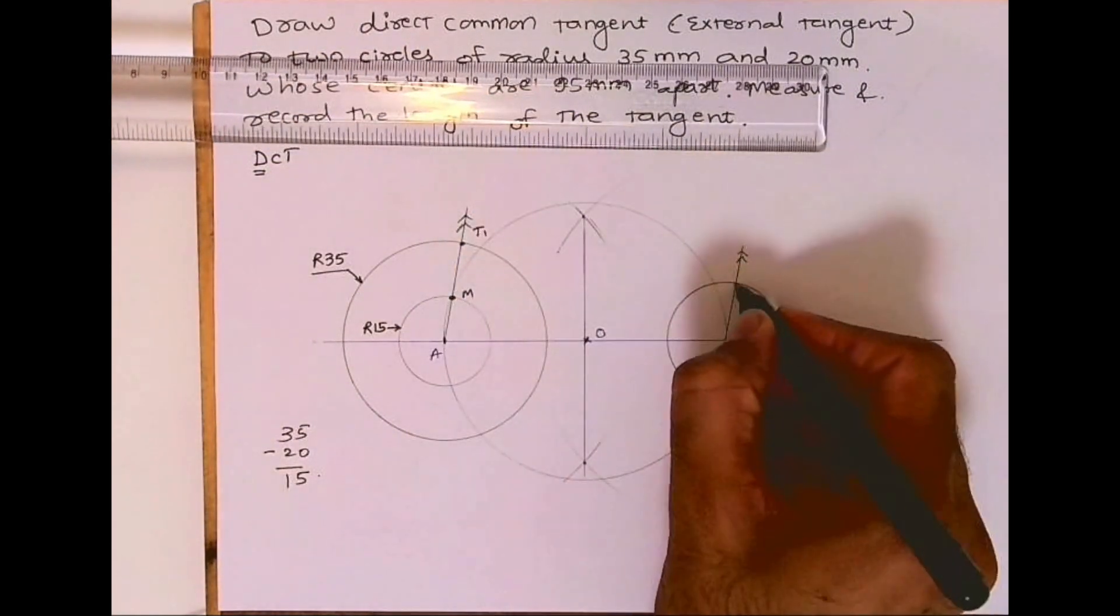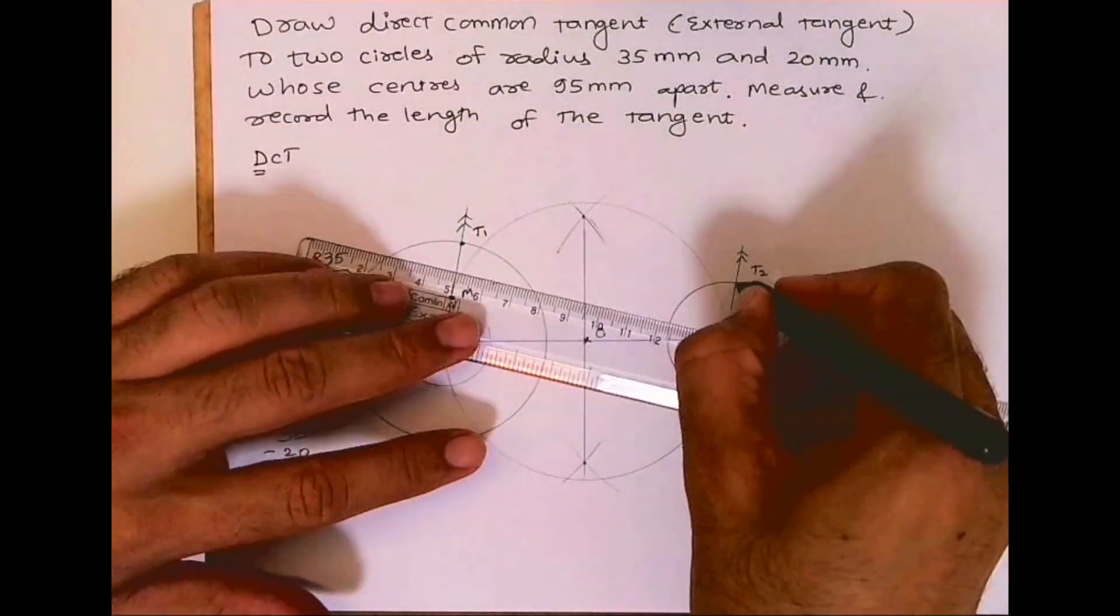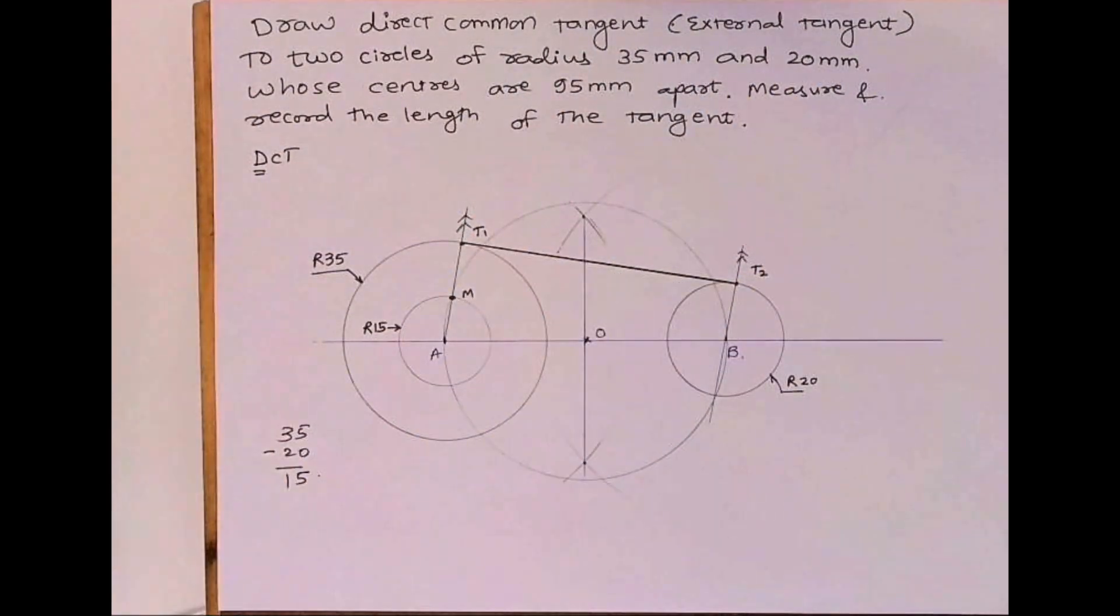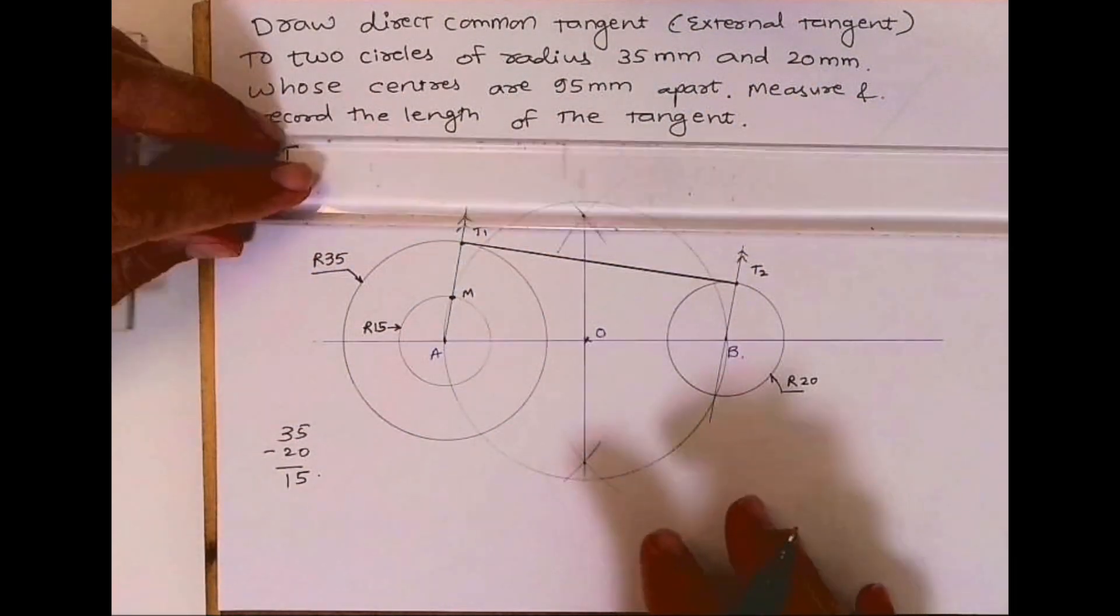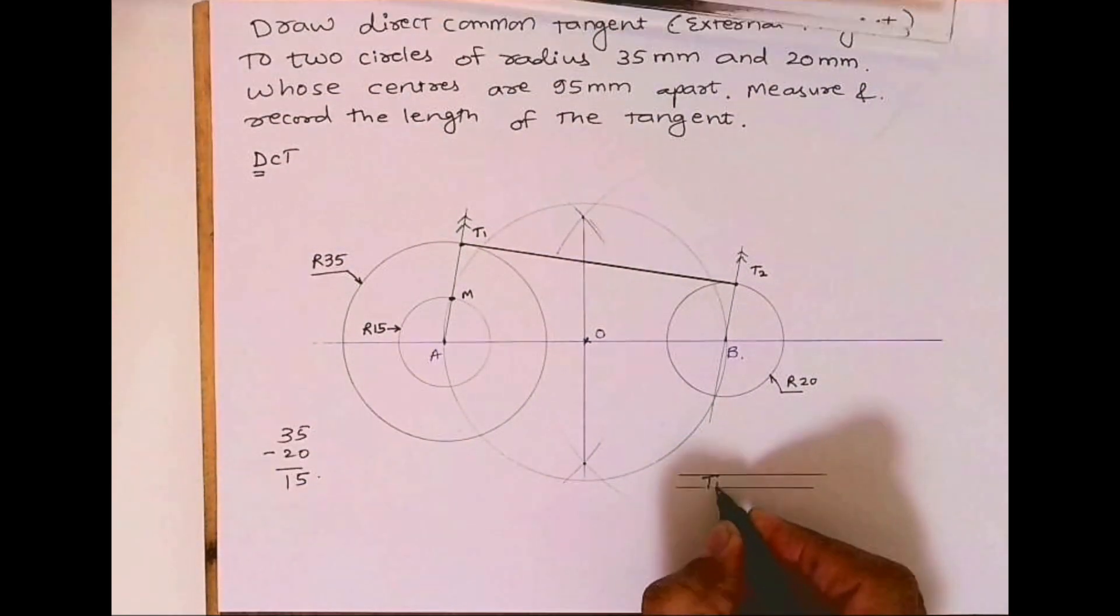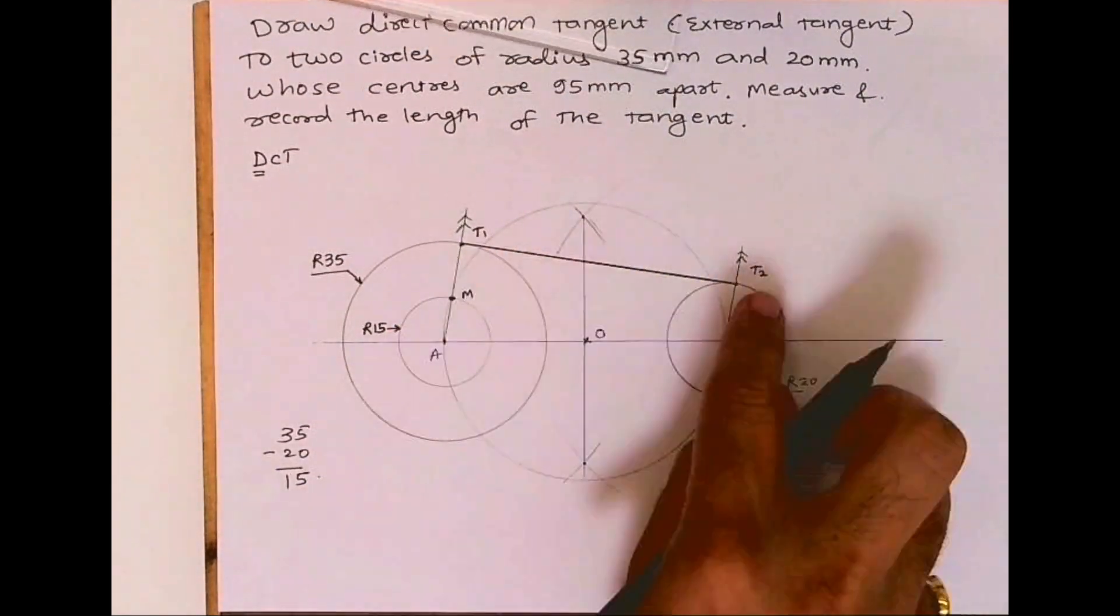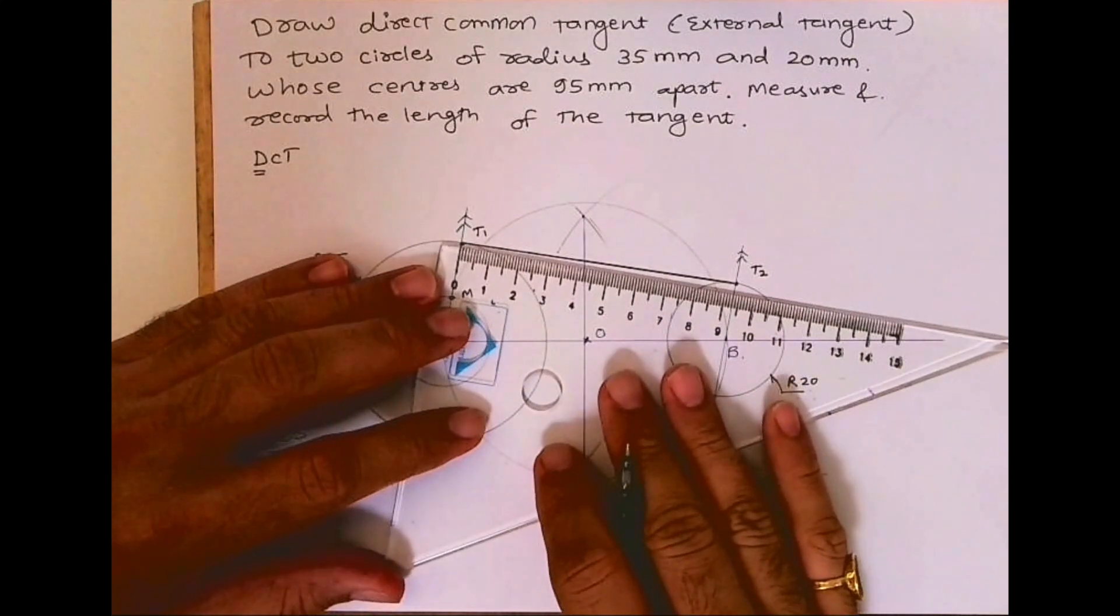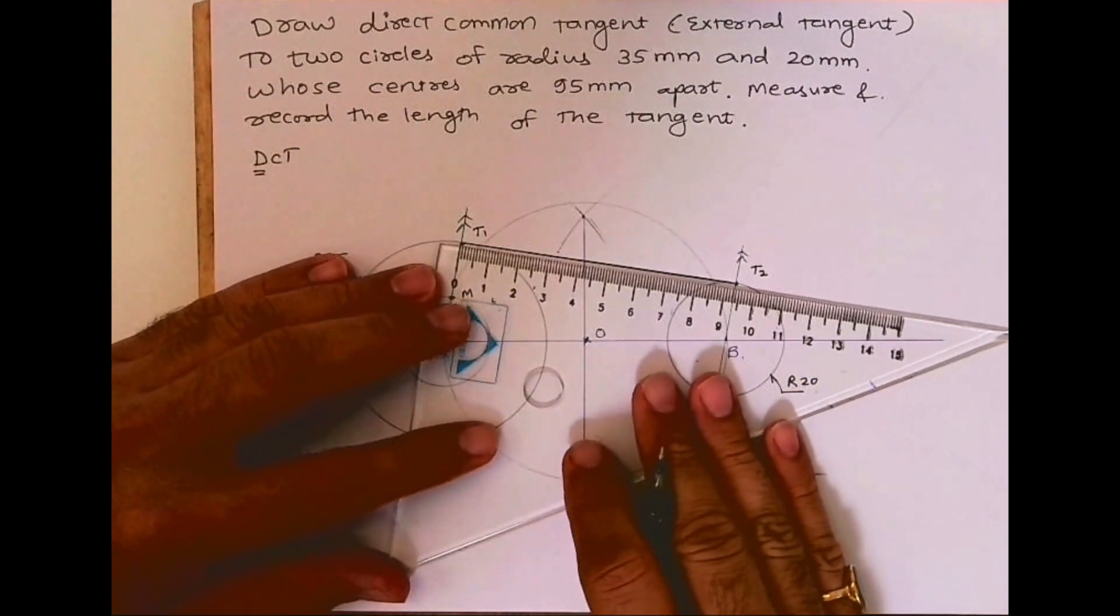Wherever that line is touching the circle, that is T1 and T2, and this is the tangent. We got tangent T1 T2. Now they want us to measure, so T1 T2 is coming somewhere around 93 to 94 mm.